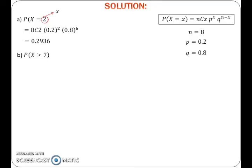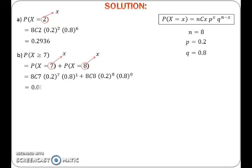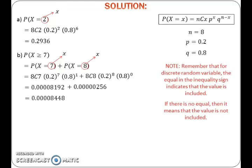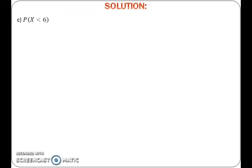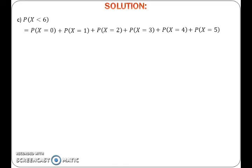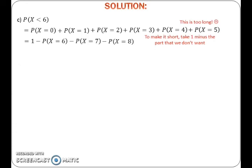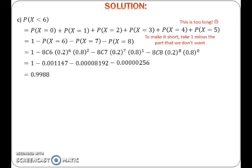To find the probability of X less than 6, take the summation of probabilities from X equals 0 up through each value. Since that summation is long, to make it shorter, take 1 minus the part we don't want — that is, 1 minus the probability of X equals 6, minus the probability of X equals 7, minus the probability of X equals 8. Substitute the values of X, N, P, and Q into the formula for each probability and calculate.